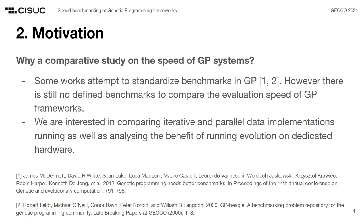Considering how crucial evaluation speeds are for genetic programming, in this work we provide a comprehensive study on the performance differences of various frameworks using different iterative and parallel data implementations. Amongst other widely used frameworks, we analyzed TensorGP, a novel genetic programming framework that we developed to take advantage of the TensorFlow library and speed up the fitness evaluation phase. Even though some attempts have been made to standardize benchmarks within genetic programming, there is still no defined testing suite or methodology to extensively compare the speed of genetic programming frameworks.